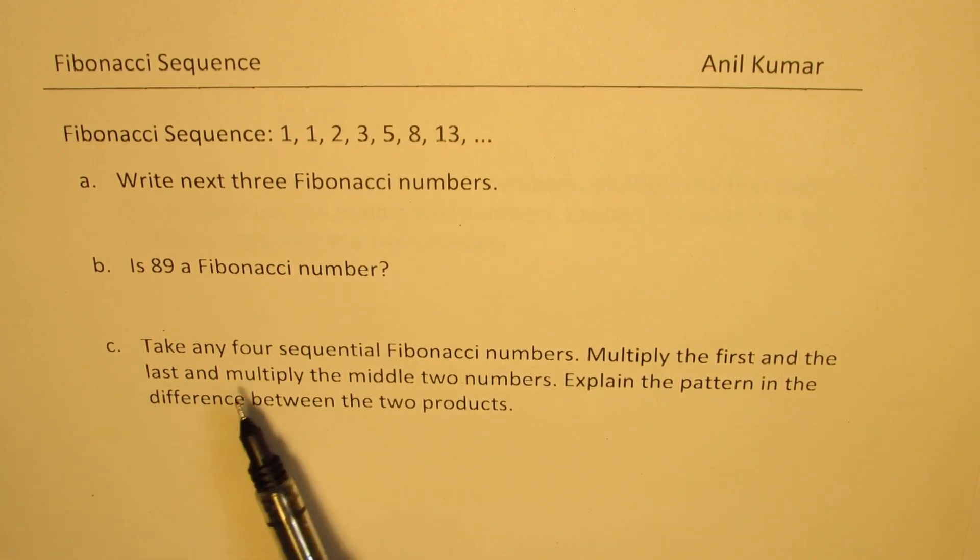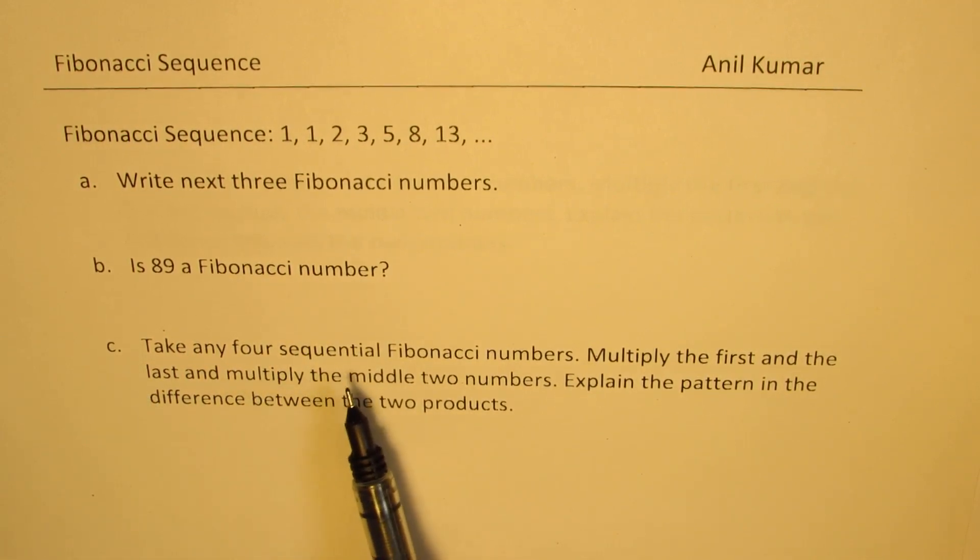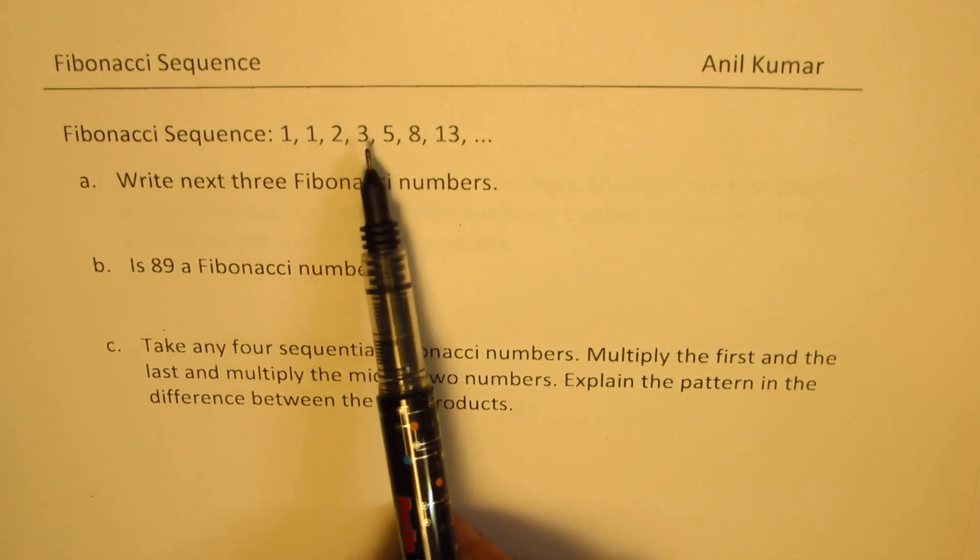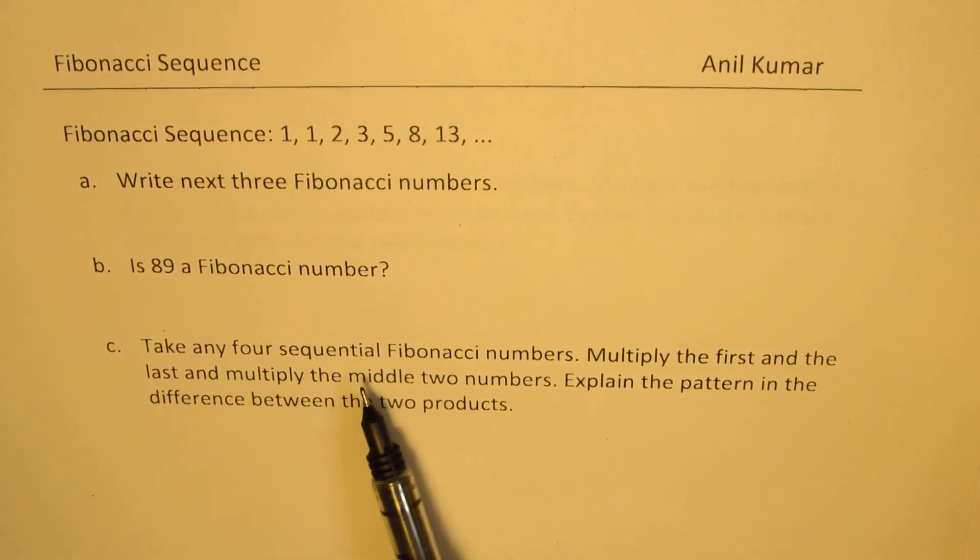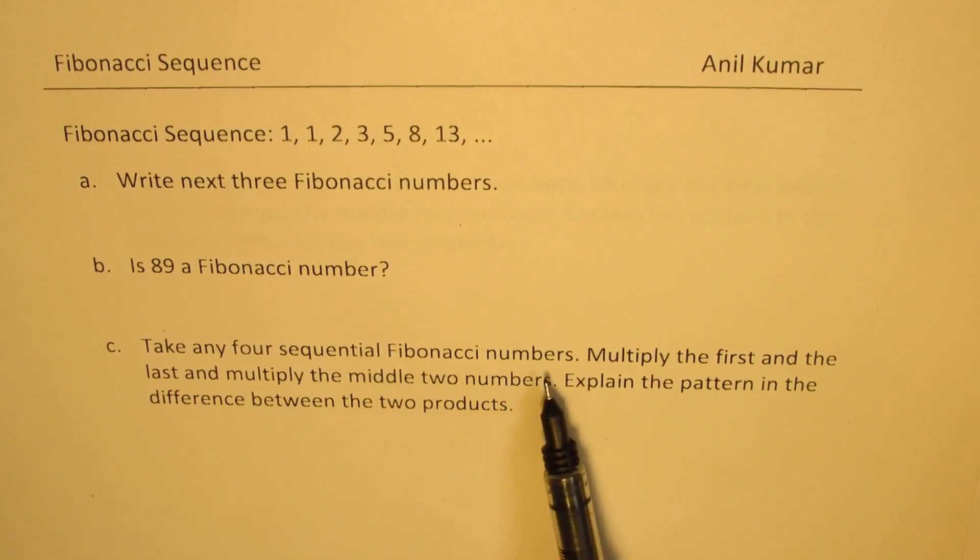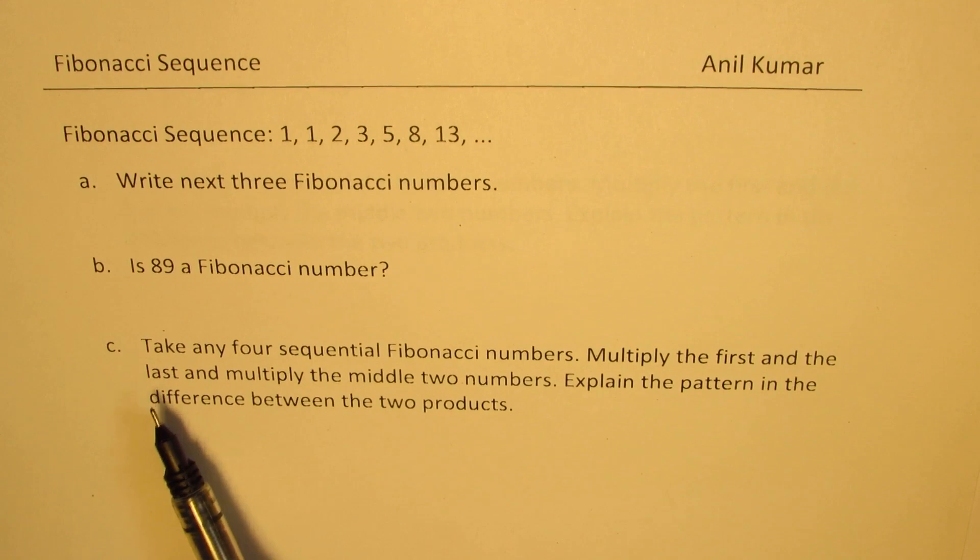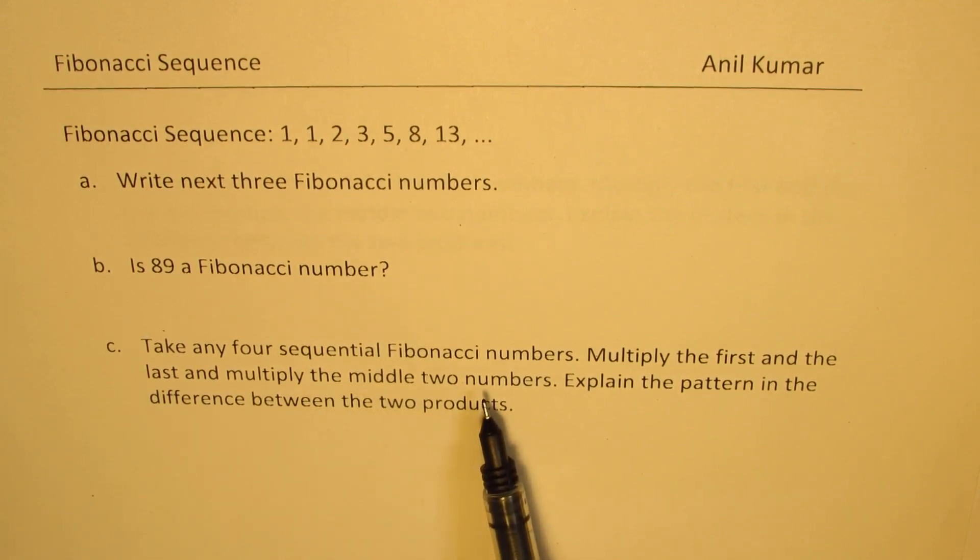And question C: take any four sequential Fibonacci numbers, multiply the first and the last, and multiply the middle two. Explain the pattern in the difference between the two products. You can always pause the video, answer this question, and then look into my suggestions.